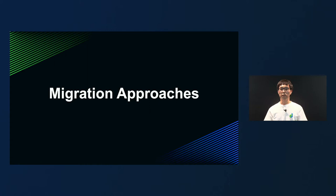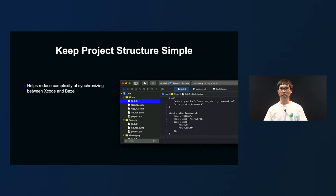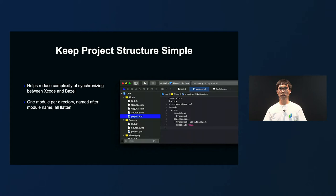Now, I'd like to talk about what kind of approaches we took when migrating to Bazel. First, we kept the project structure simple. During and after the migration, we made sure that we maintained the build systems of both Bazel and Xcode. If you keep your project structure as simple as possible, it'll help you sync those build systems in build settings and others. In LINE iOS projects, we have one module for one directory with the same name for module and directory, so that we can have a flat directory structure across the board.